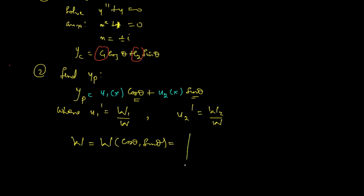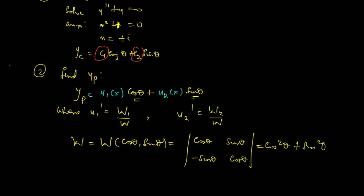Computing the determinant: cos²(θ) + sin²(θ), which by trig identities equals 1. So W = 1. Now to find W1 and W2, we need to ensure the differential equation is in standard form — meaning the coefficient of the highest derivative must be 1. Since this equation is already in standard form, there is nothing to divide through by.